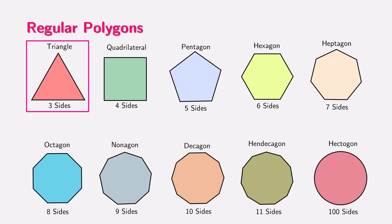The first shape is a regular triangle, also known as an equilateral triangle, with three sides. Next, we have a square, a regular quadrilateral with four sides. The shape with five sides is a regular pentagon. With six sides, we have a regular hexagon. The shape with seven sides is a regular heptagon. The octagon has eight sides. The nonagon has nine sides. The decagon with 10 sides comes next. And finally, we have a hendicagon with 11 sides.